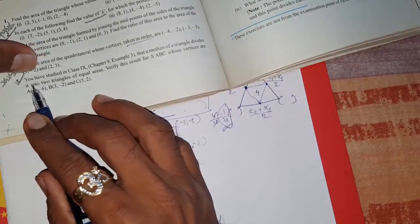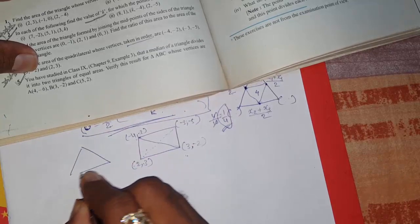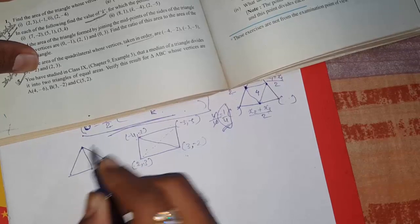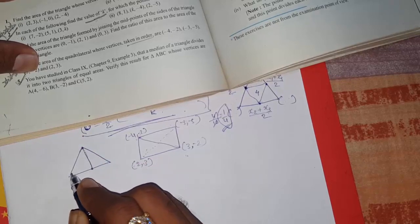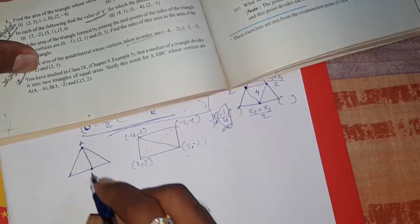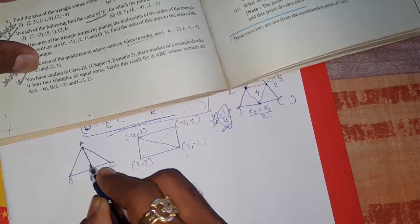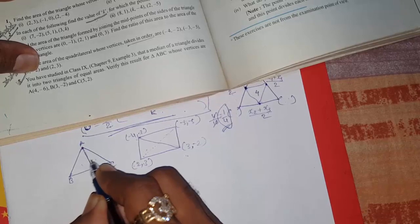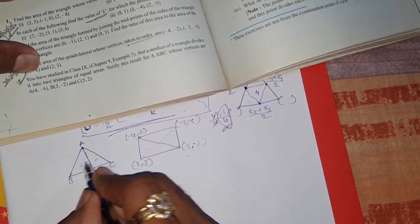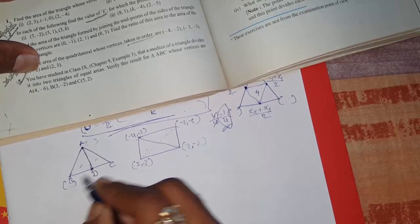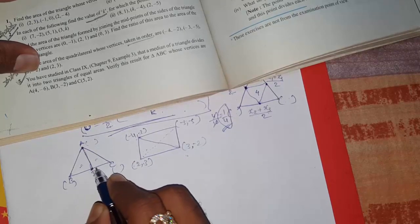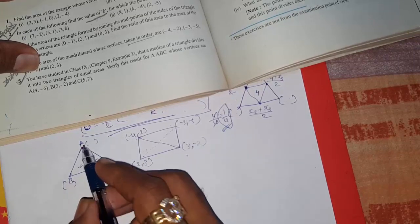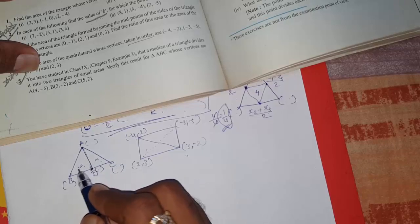The last question is based on something you studied in class 9: the median of a triangle divides it into two triangles of equal area. A median is the line from one vertex to the midpoint of the opposite side. They give you three coordinates of a triangle. First find the midpoint of one side using the midpoint formula, then find the area of both smaller triangles formed by the median. If the areas are equal, we have proved that the median divides the triangle into two equal areas.